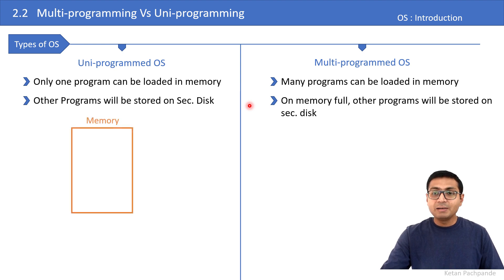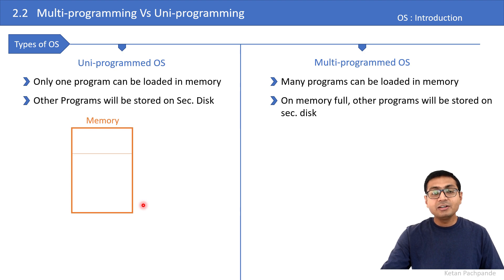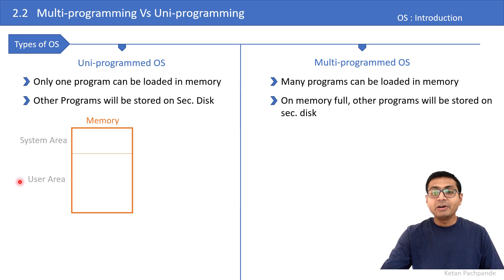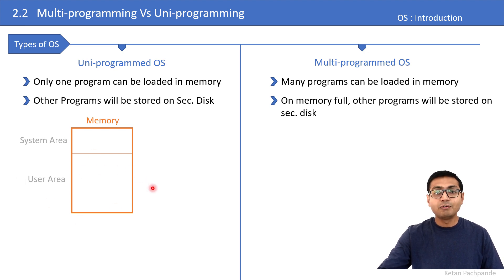Let me explain with the help of this diagram. I have taken the memory, which is the RAM. When the operating system boots, memory is divided into two areas: the system area and the user area. In the system area, when the OS boots, it loads its own kernel-level programs. In the user area, whenever the user runs any program, memory will be allocated for that process.